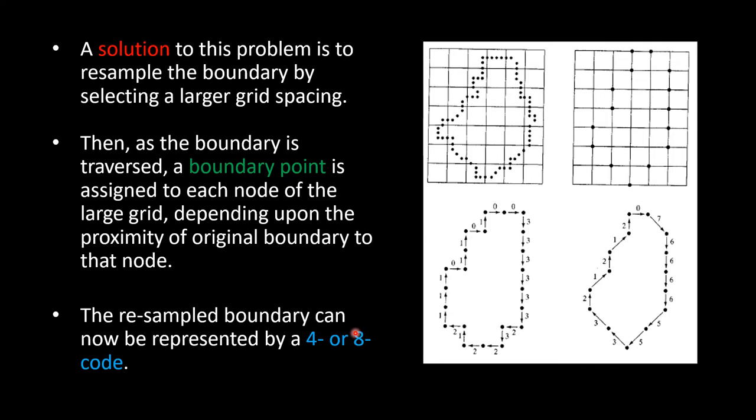A solution to this problem is to resample the boundary by selecting a larger grid space. Then as the boundary is traversed, a boundary point is assigned to each node of the large grid depending upon the proximity of original boundary to that node. The resampled boundary can now be represented by a 4 or 8 code.